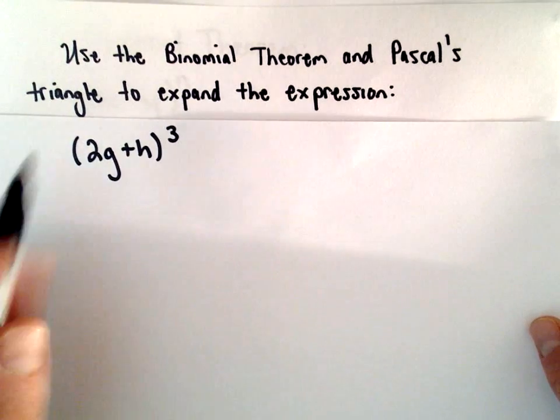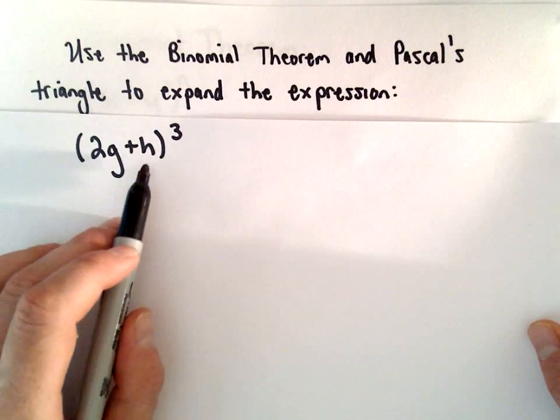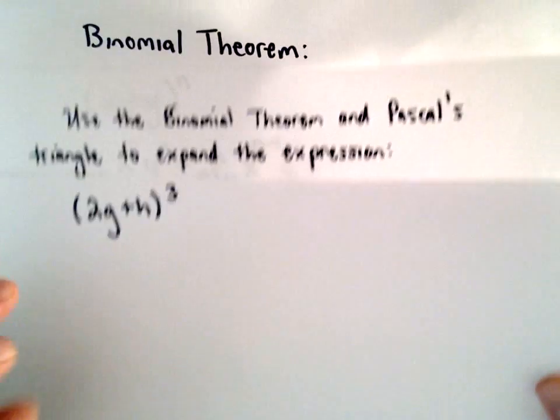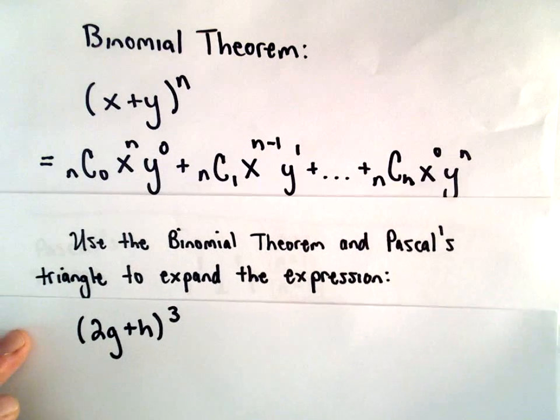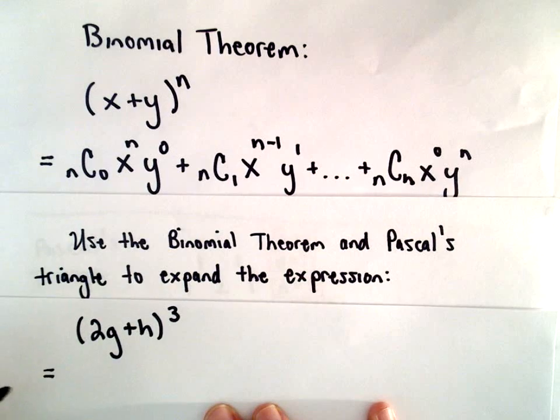Here we're going to use the binomial theorem and Pascal's triangle to expand the expression 2g plus h cubed. I've got the binomial theorem here jotted down, so I'm going to start using this formula to expand things out.